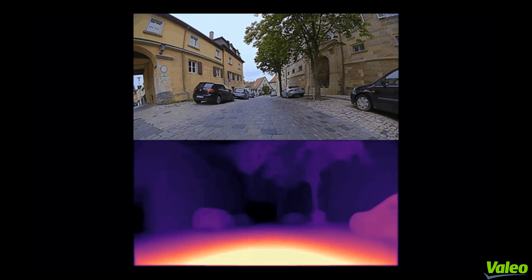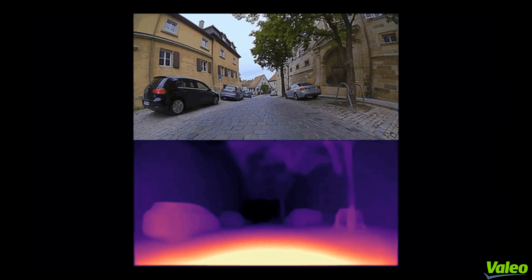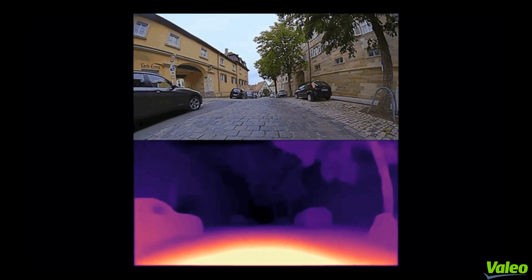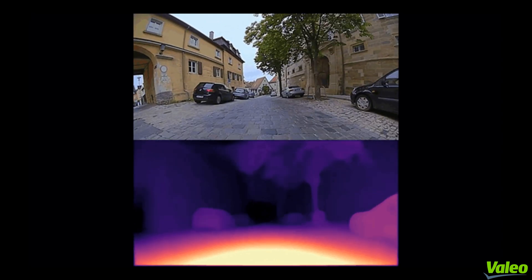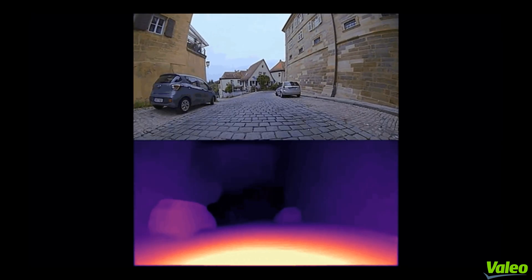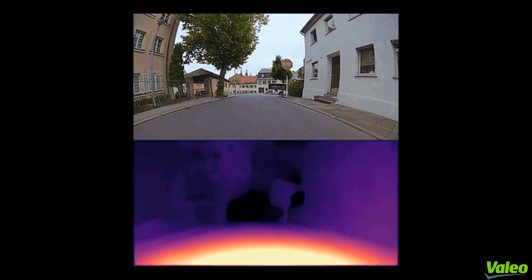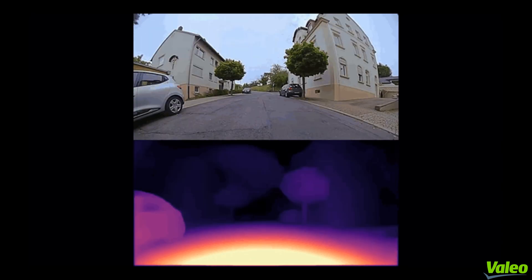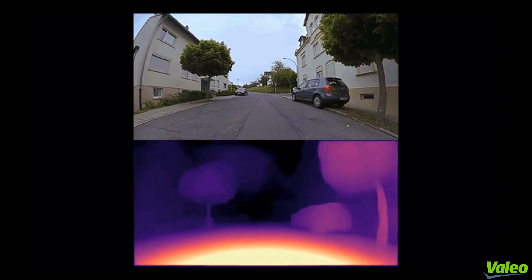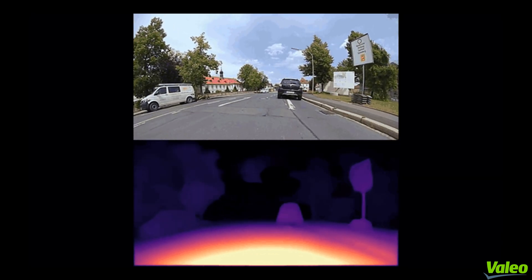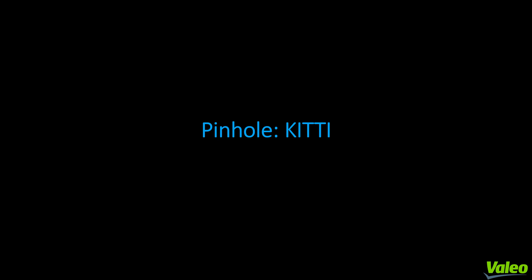I would like to showcase a few distance estimate snippets. As we can see in this video, near the edges there are large distortions from the fisheye cameras. Let us look at a few snippets from the KITTI dataset compared with previous state-of-the-art approaches.